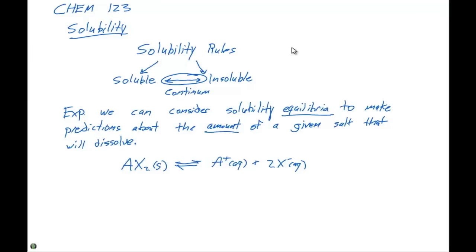One thing that we want to remember, if we have a large value for K, that tells us something. If our value for K is very large, that means that the products are gonna be favored, or another way we can say that is that the equilibrium lies to the right.